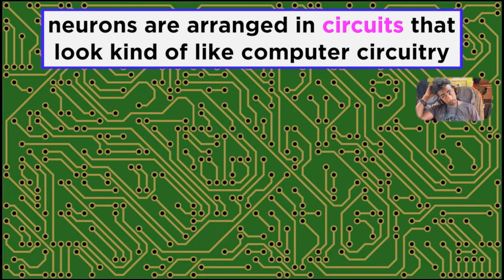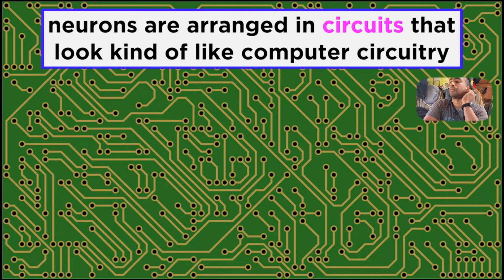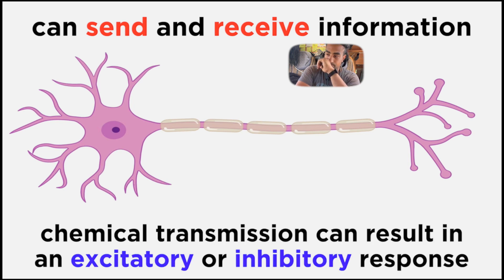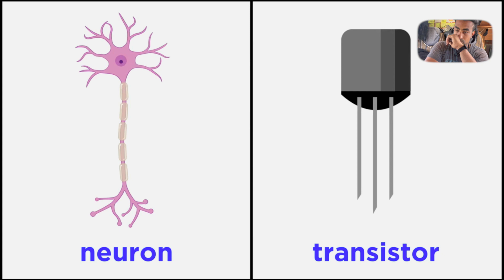In fact, neurons are arranged in circuits loosely analogous to computer circuitry. Each neuron can both send and receive information, and chemical transmission across a synapse can yield either an excitatory or inhibitory response. Although it's not a perfect comparison, these similarities make a neuron not entirely unlike a transistor.